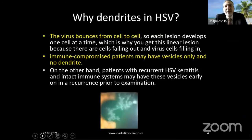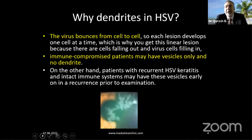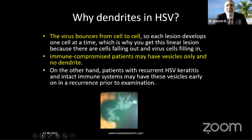Why do we get dendrites in HSV? The virus bounces from cell to cell — as someone poetically described it. Each lesion develops one cell at a time, which is why you get this linear lesion, because cells are falling out and virus cells are filling in. The virus knocks off the original epithelial cells and viral cells take their place. Because it's moving in a drunken manner, you get this dendritic pattern.